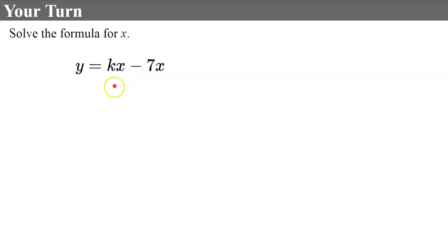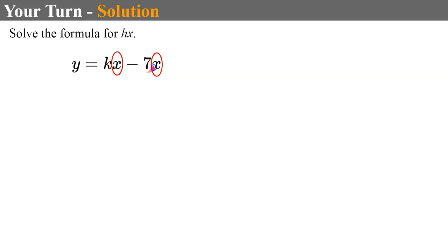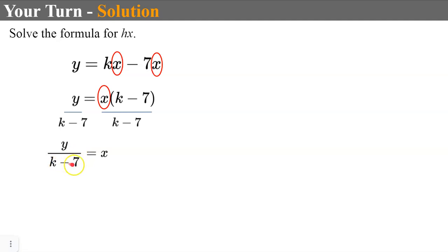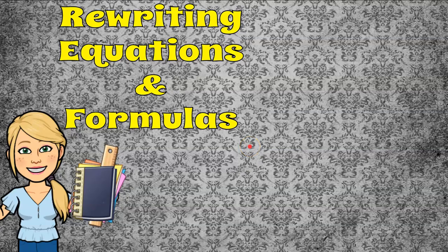Welcome back. The first thing we're going to do is factor out the X. Both terms have X and they're not like terms, so when I factor, I get X(K - 7) — because XK is KX and X times -7 is -7X, so it works. Now solving for X, I divide both sides by (K - 7), which gives me Y ÷ (K - 7) = X. Or you could write it as X = Y ÷ (K - 7).